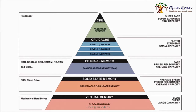Then we have the physical memory, which is the RAM that we put into our laptops and CPUs, defined as DDR RAM and RDRAM. They are fast and reasonably priced compared to cache memory, but average in capacity — in the order of gigabytes, from one gigabyte up to a maximum of 16 GB.